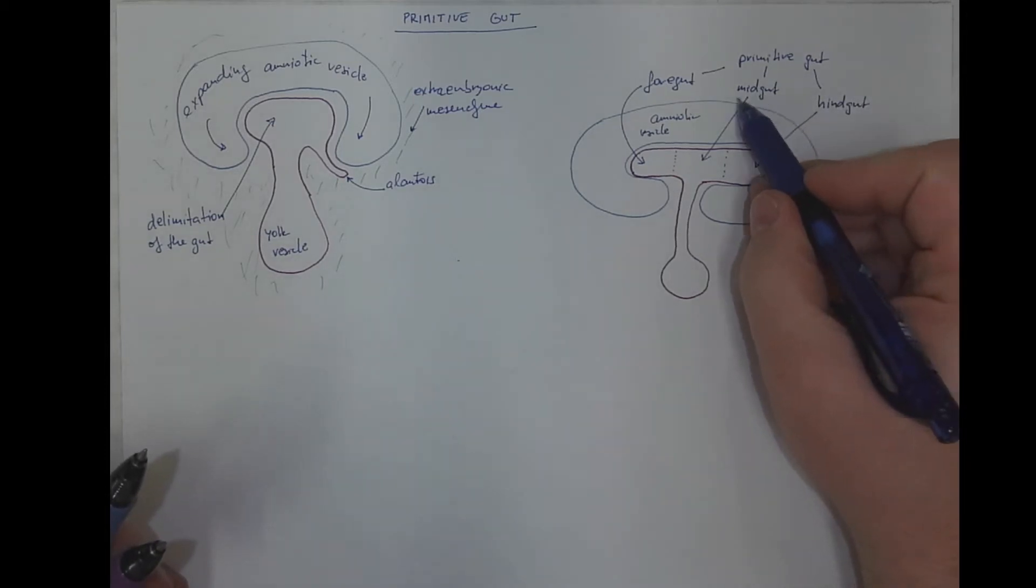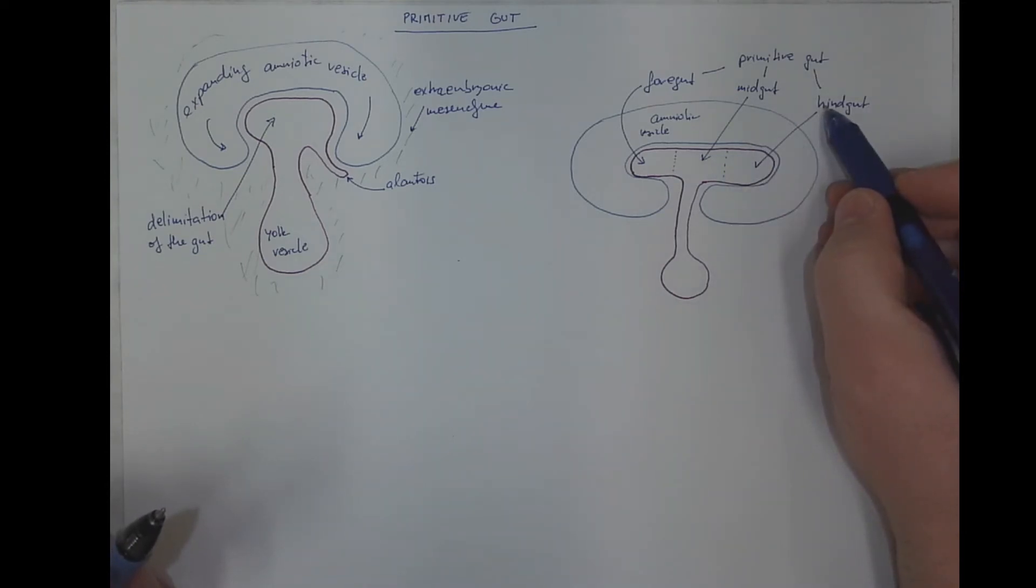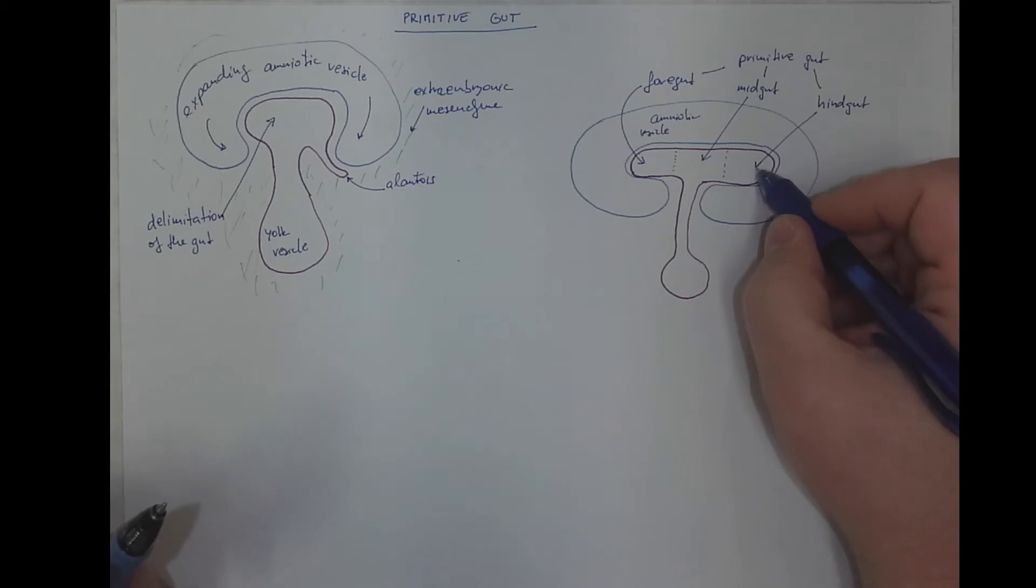While the artery that supplies the midgut is the superior mesenteric artery, then the artery supplying the hindgut is the inferior mesenteric artery.